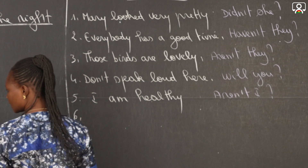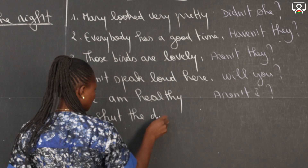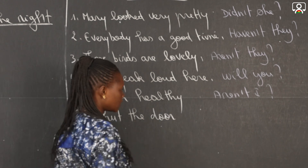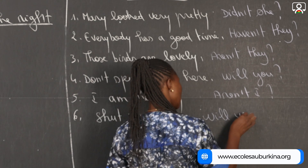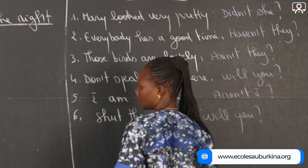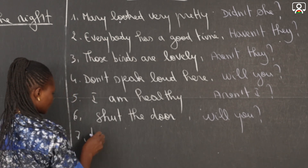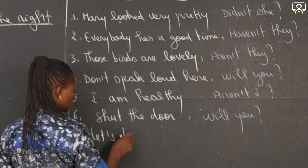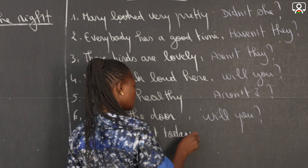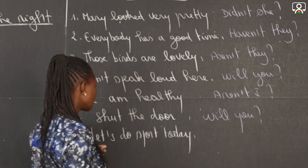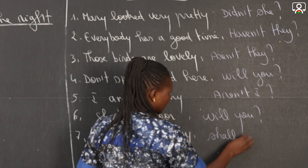Number six: shut the door. It is an imperative sentence, so the tag is going to be 'will you'. Number seven: let's do sport today. Here also is an imperative sentence, so we are going to have 'shall we'.